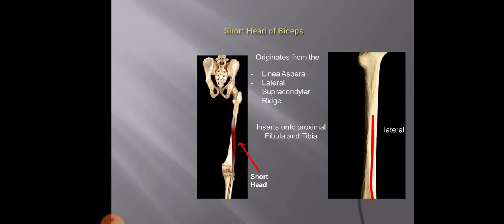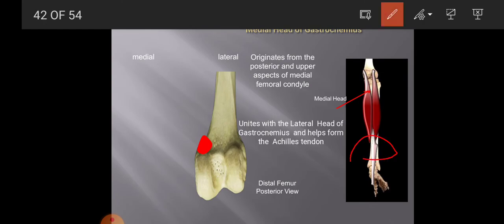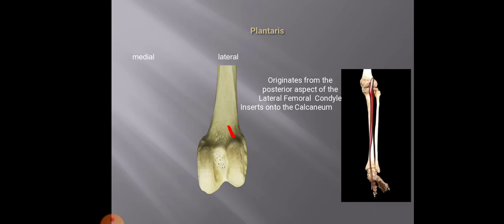Coming to the lower end, on the medial condyle we have the origin of the medial head of the gastrocnemius muscle. This medial head unites with the lateral head of gastrocnemius and forms the Achilles tendon. The lateral condyle gives attachment to the lateral head of gastrocnemius. The plantaris muscle arises from the posterior aspect of the lateral condyle of the femur, just above the origin of the lateral head of gastrocnemius, and inserts with the tendo Achillis on the calcaneum.